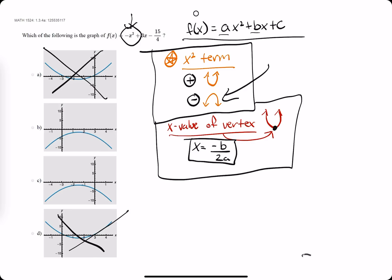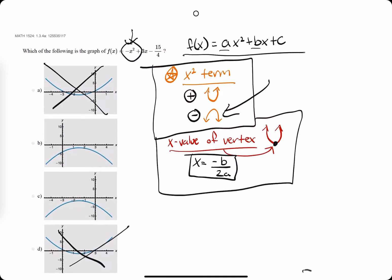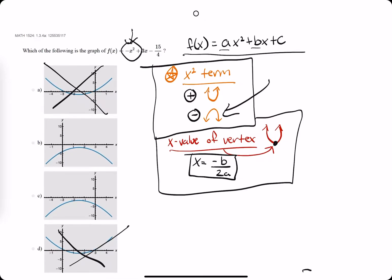they come from the idea that any quadratic or x squared function can be written in the form ax squared plus bx plus c. So our a and b values are the coefficients in front of the x squared and x terms.